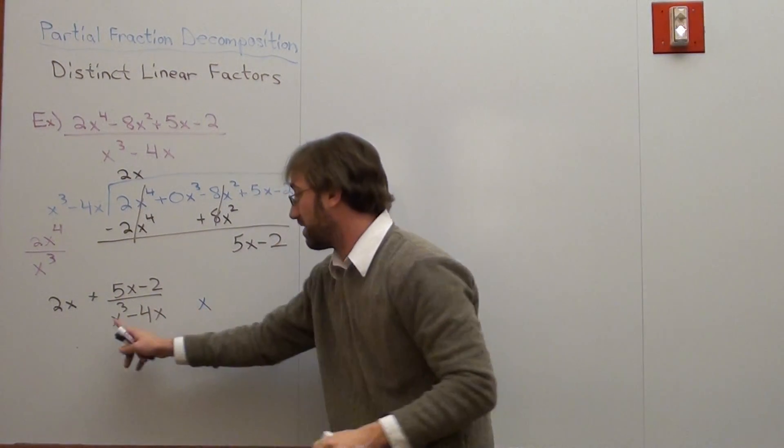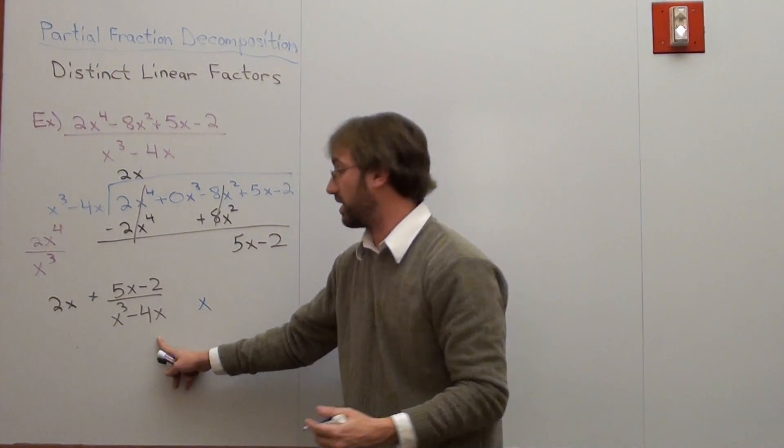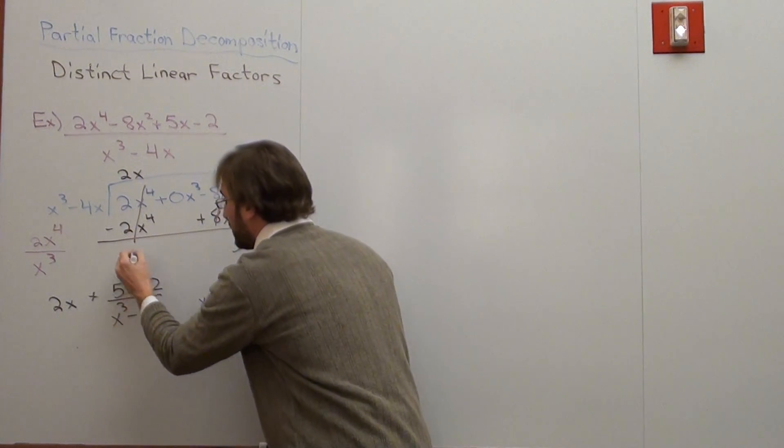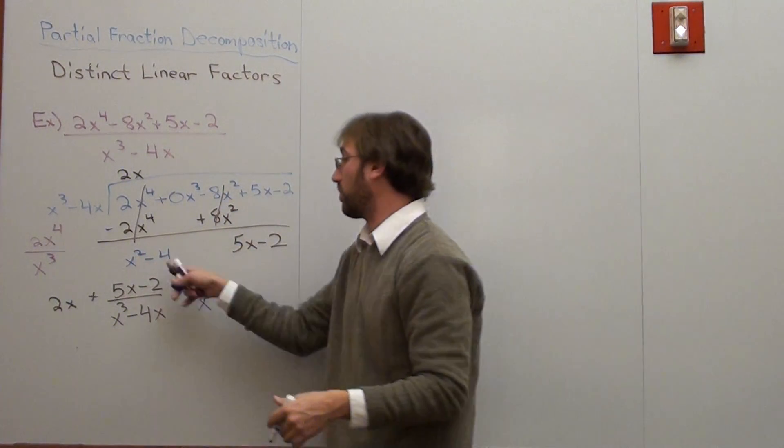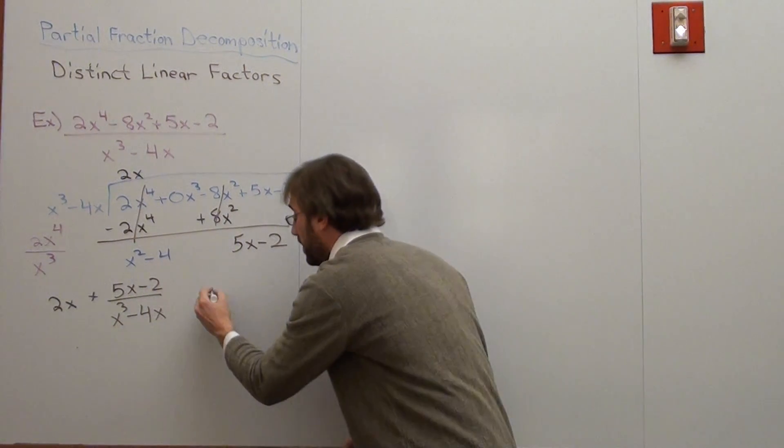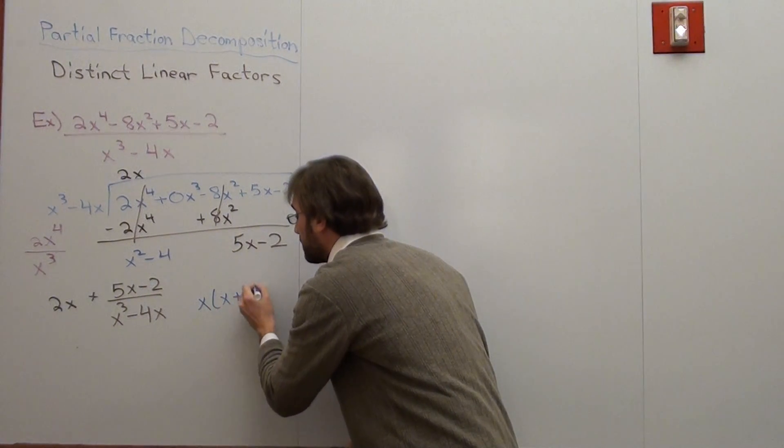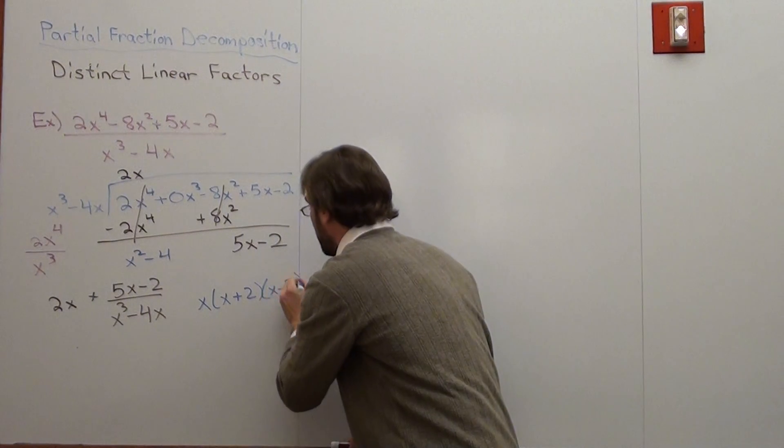It turns out to be, now we can factor out an x, and what we're left with is x squared minus 4. When we factor out an x, we're left with x squared minus 4. But we're going to go ahead and factor x squared minus 4 as well. That turns out to be x plus 2, x minus 2.